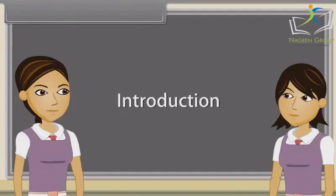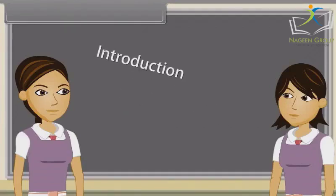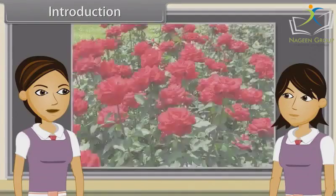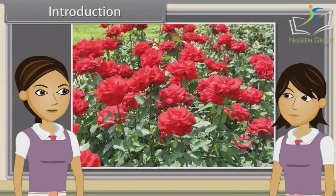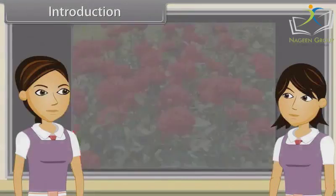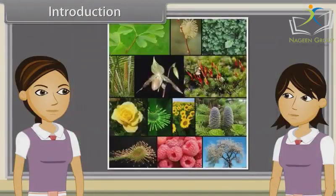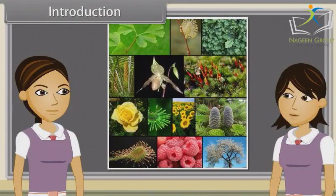Sharmila, in a few words, define a plant. Yes, any member of the kingdom Plantae, comprising multicellular organisms, that produces their own food by the process of photosynthesis.